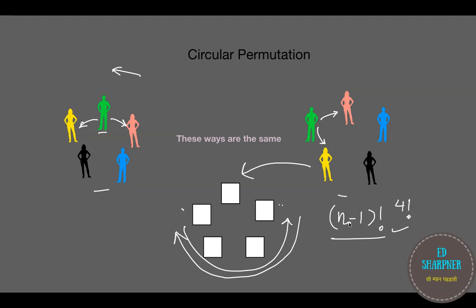There is an obvious question: for the first choice I sent the yellow woman into the box — we had five choices. But because we were just putting a reference point, everybody went into some or other box anyway, so it didn't matter in the overall picture. That is why we did not consider n choices for the first box.